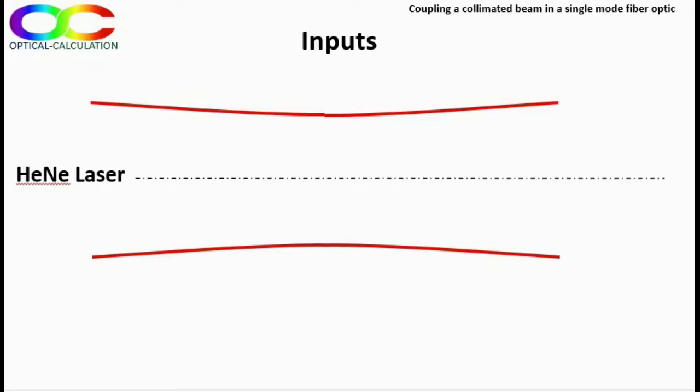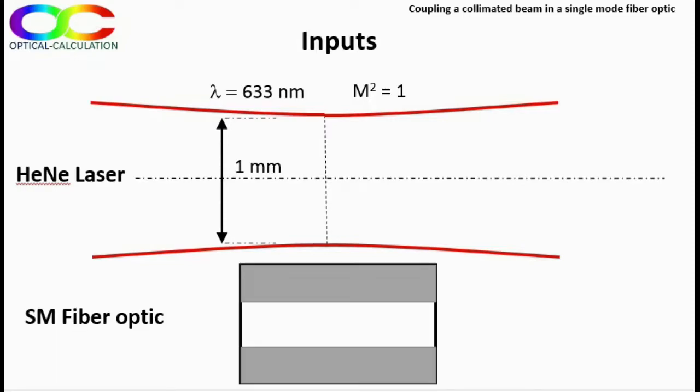In the present case, the laser is an aluminum laser emitting in the red at 633 nanometer. Its collimated beam has a one millimeter diameter, which is supposed to be the 1/e² diameter. The beam is supposed to be perfectly Gaussian and therefore its M² is equal to one. The single mode fiber has a four micron mode diameter. This mode is supposed to be Gaussian.